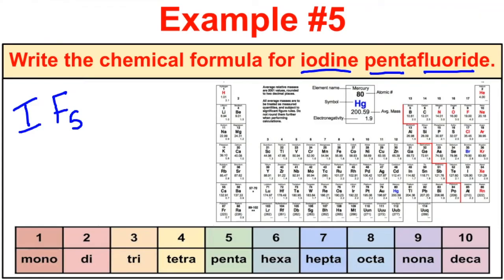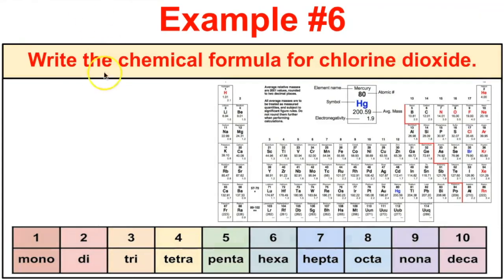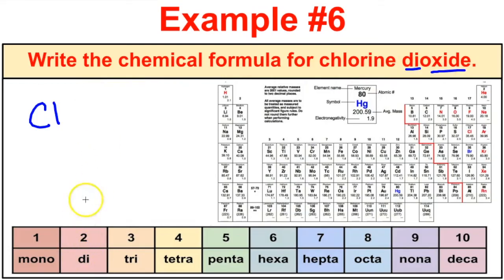One last example: chlorine dioxide. Chlorine is Cl with no prefix, so subscript 1. Dioxide: di is 2 and oxide is O, giving ClO2. So there are some examples of naming and writing the chemical formulas of type 3 binary compounds.